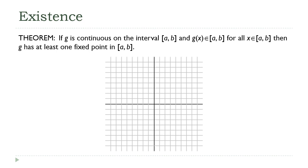First we're assuming that the function that we're trying to find a fixed point for is continuous on the interval from a to b. Okay let's sketch that in. This is x equals a and this is x equals b. So we're only going to be concerned about our function between those two values.